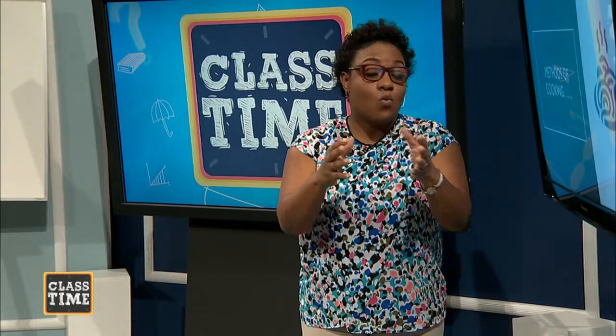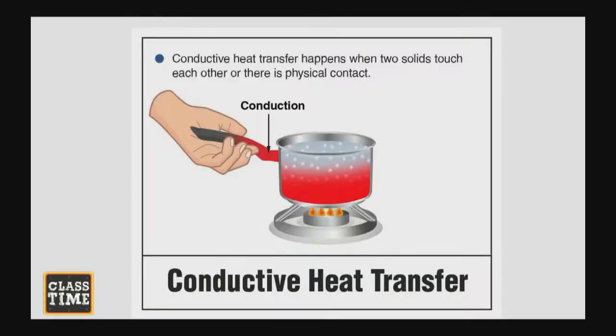We looked at how these different types of heat are transferred: conduction, radiation, and convection. Though they're not in isolation, in one method of cooking you can have all three principles of heat being applied to the food — you just need to know which is which. Conduction is solid to solid — the heat is being transferred when two solids touch each other.